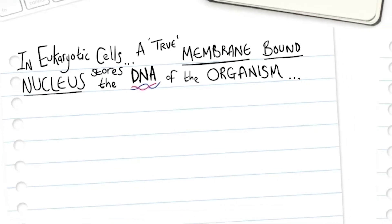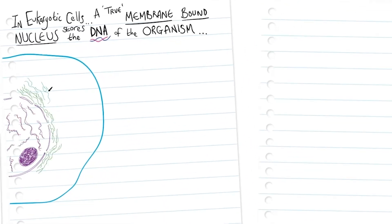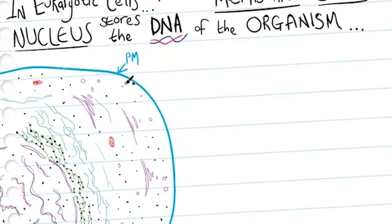In eukaryotic cells, a true membrane-bound nucleus stores the DNA of the organism. Here's my diagram of a typical eukaryotic animal cell, and on the outside we have the plasma membrane.